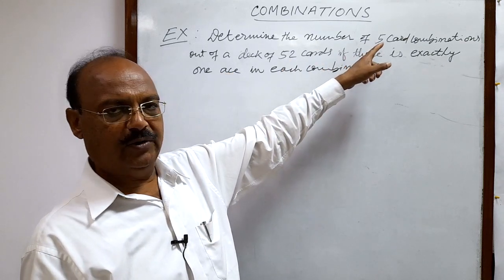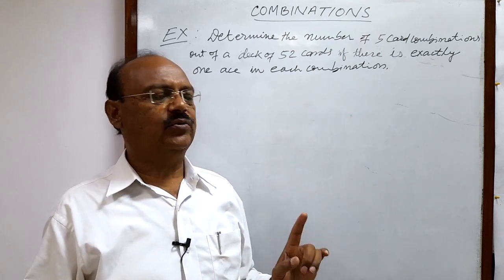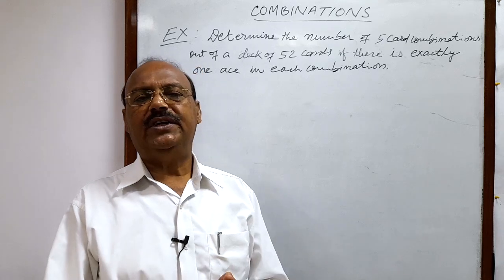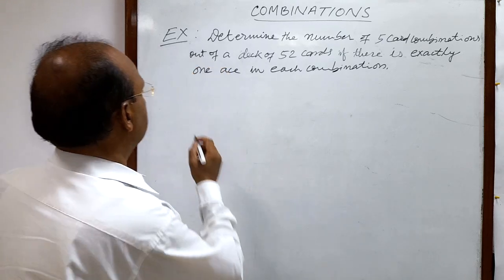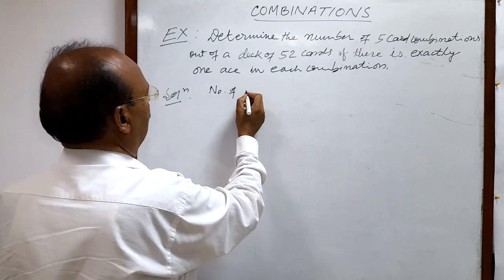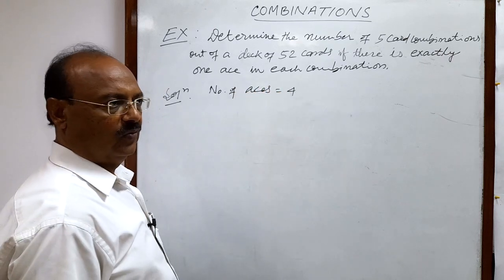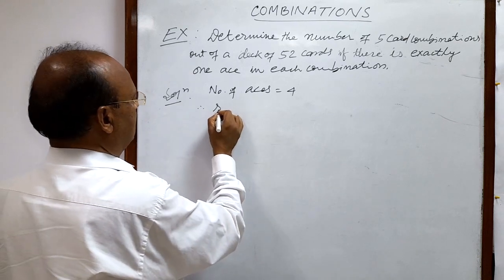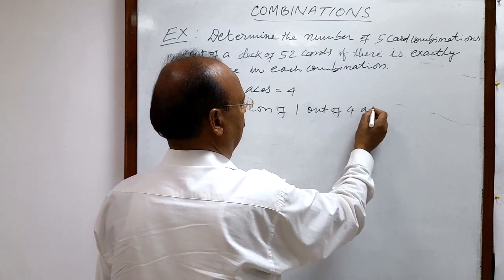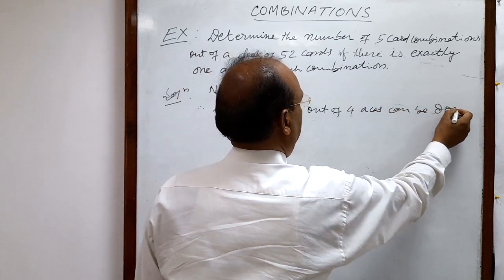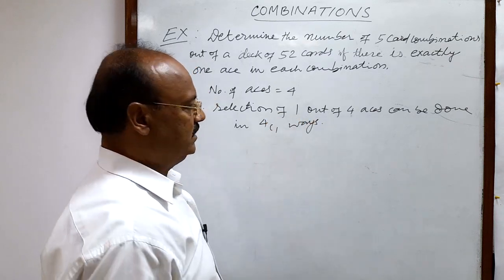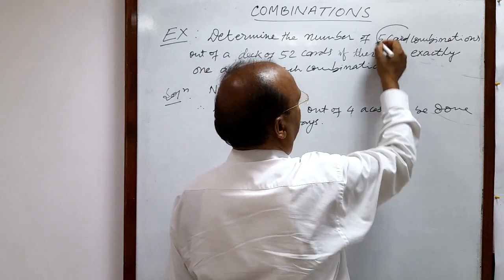By this condition, in the selection of five cards, one ace must be there. That one ace will be selected from the four aces. So out of these four aces, we have to select one ace in 4C1 ways. Let us see the solution: the number of aces is four, so selection of one out of four aces can be done in 4C1 ways.